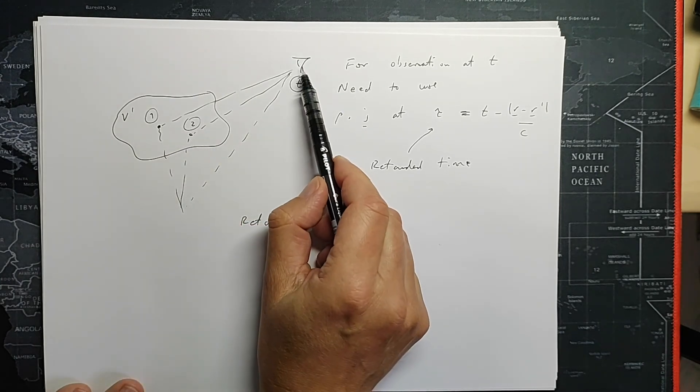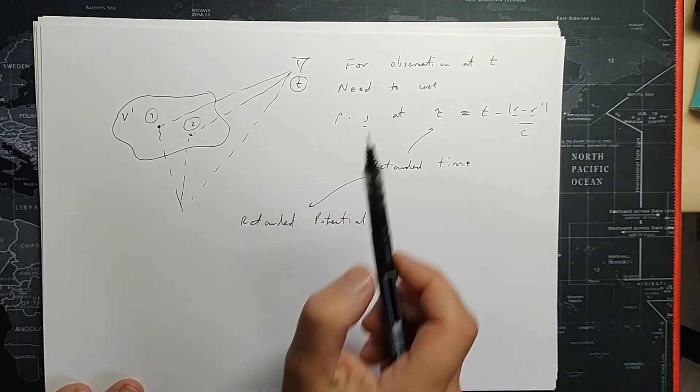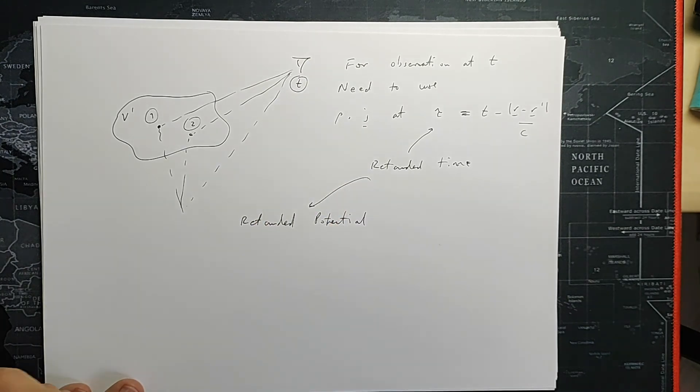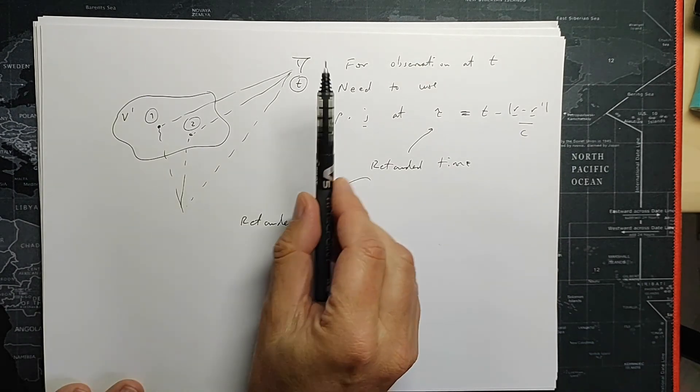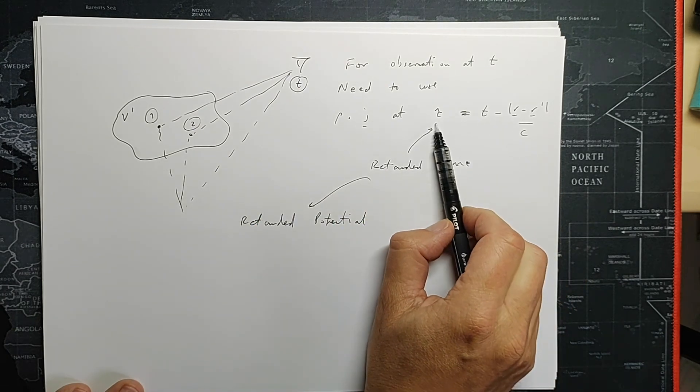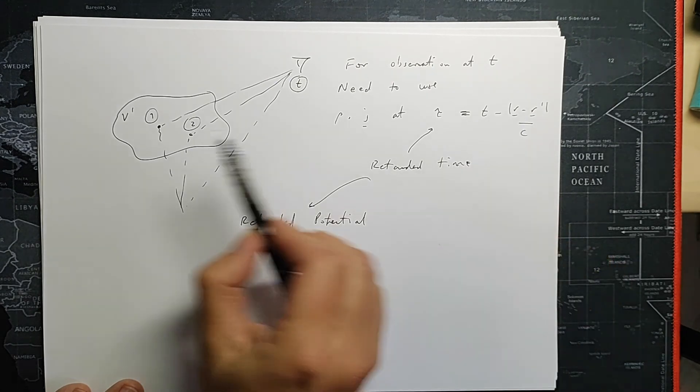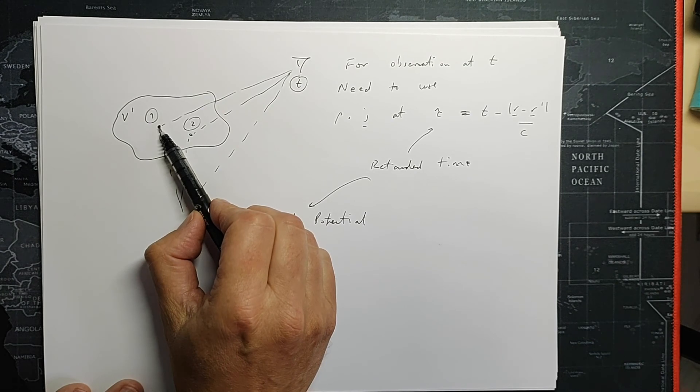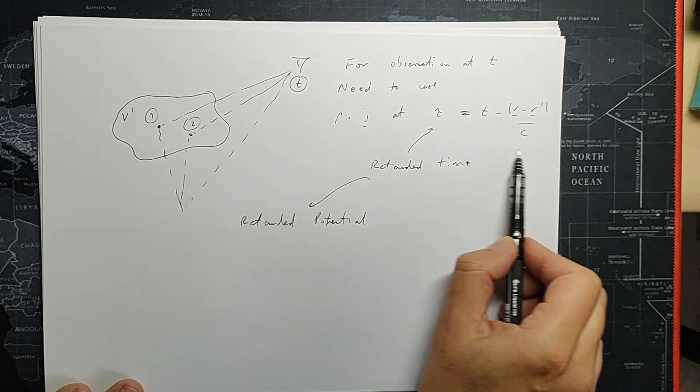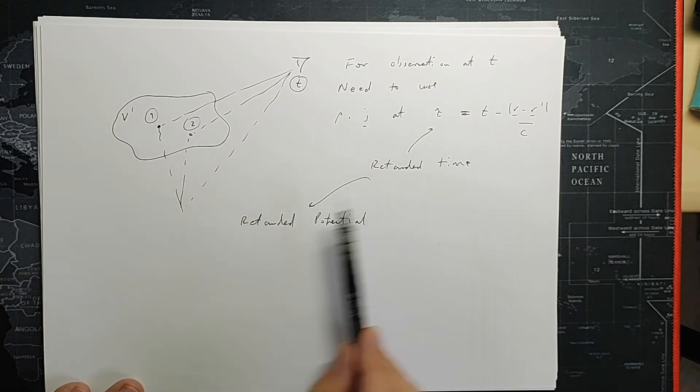So to work out the solution for our scalar and vector potentials in this dynamic case, we need to use the values of rho and j which occur at these earlier times. So if I'm observing at a time t, the potential I see is due to the charges at this retarded time where I need to subtract off the time it takes for the information to travel from each of these particular places. So this retarded time over here will be different for each of the different charges and currents over this volume. So the retarded time leads naturally to the idea of the retarded potential.